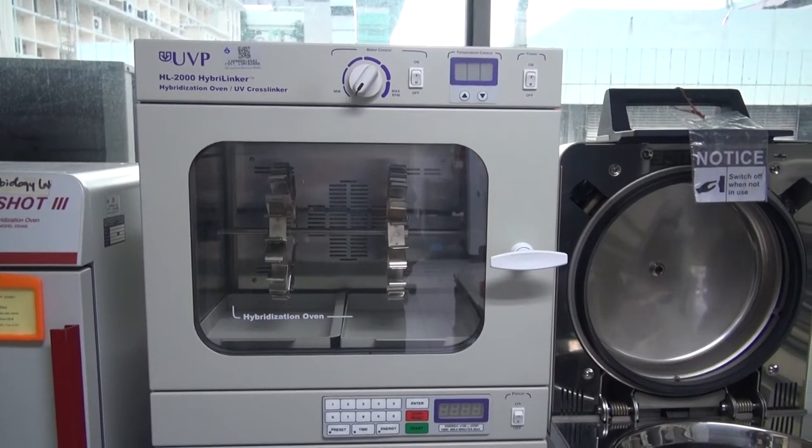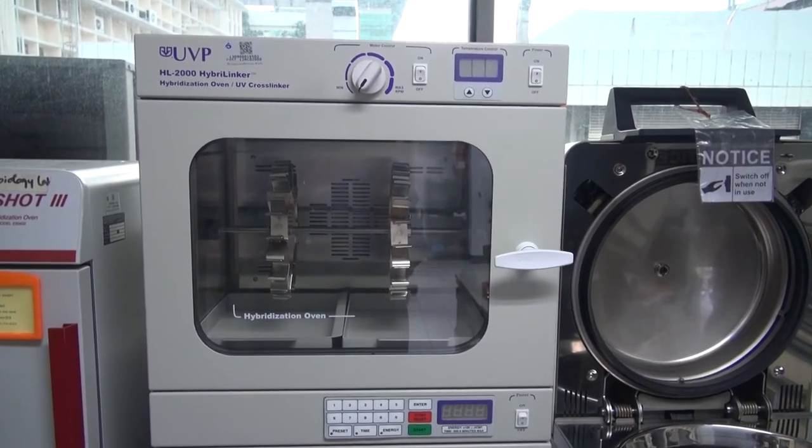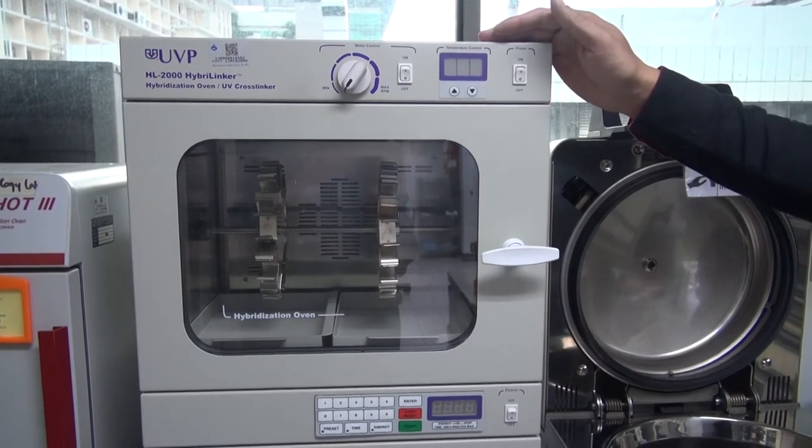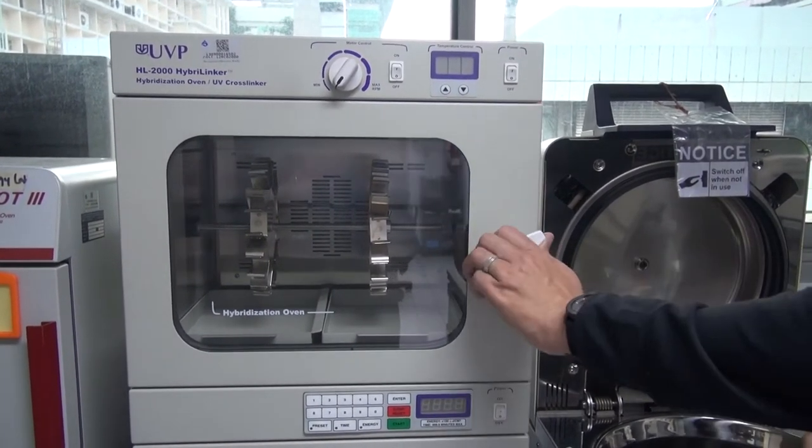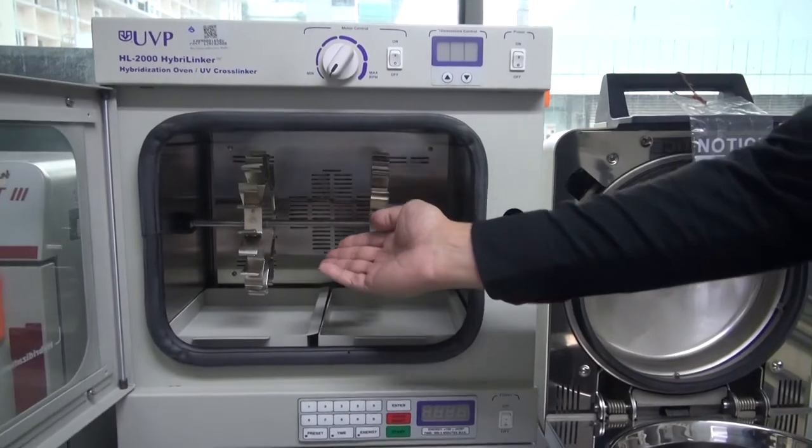Now let me demonstrate how to operate the hybridization oven, the upper unit. The oven is equipped with the bottle carousel holder as shown here.